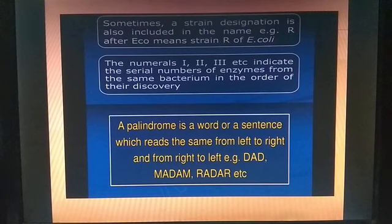The numerals — first, second, third, etc. — indicate the serial number of enzymes from the same bacteria, in the order of their discovery.